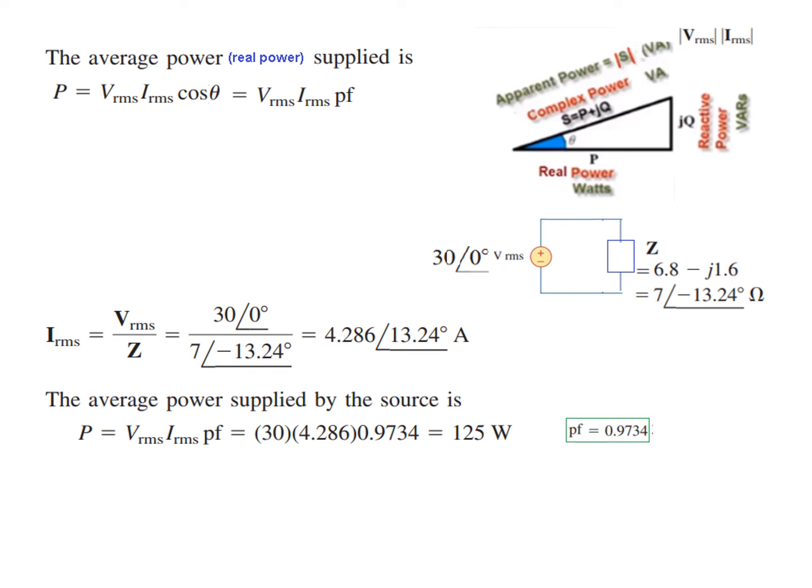Now we can also find the average power directly from I squared R formula. Now in this case, if you see this, if we represent it in terms of resistance and capacitance, it will be something like this: 6.8 will be the resistive value and minus j1.6 will represent the capacitive value. So we'll use this resistor because power in watts is consumed only in resistor. So I squared R: 4.286 squared multiplied by the resistor, so power is 125 watts, the same.